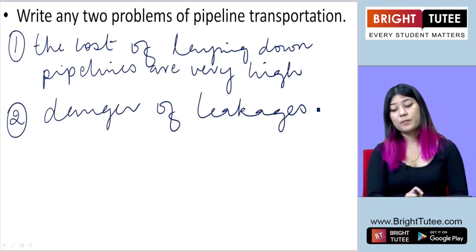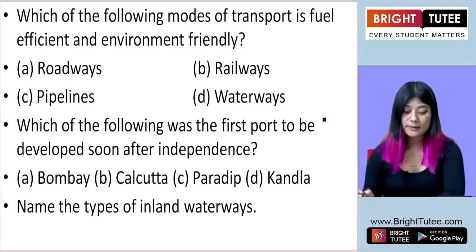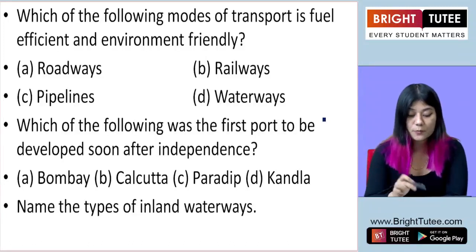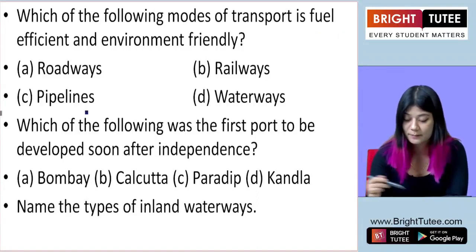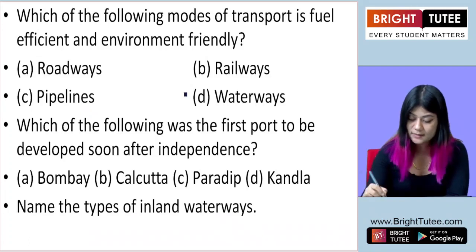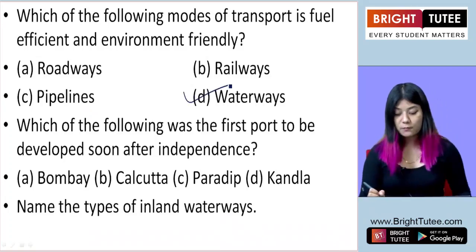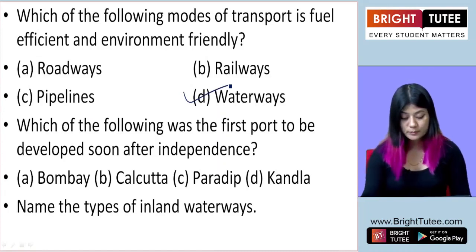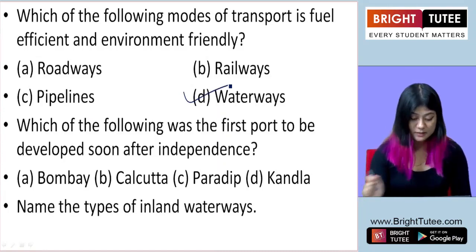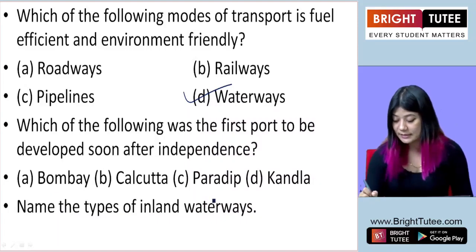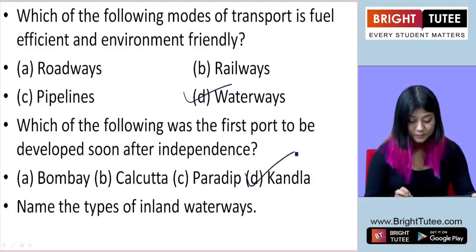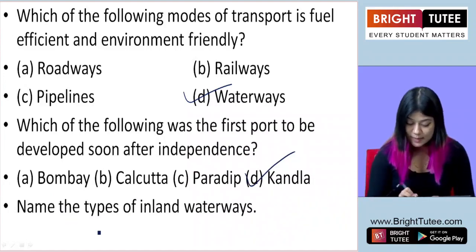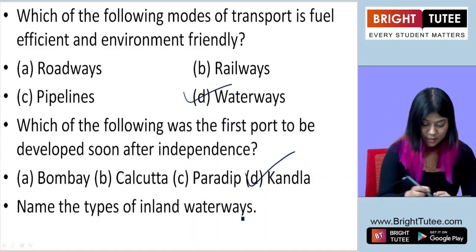Let's look at the next questions. Which of the following modes of transport is fuel efficient and environmentally friendly — roadways, railways, pipelines, or waterways? It is waterways. The next question: which of the following was the first port to be developed soon after independence — Bombay, Calcutta, Paradip, or Kandla? The correct answer is Kandla.